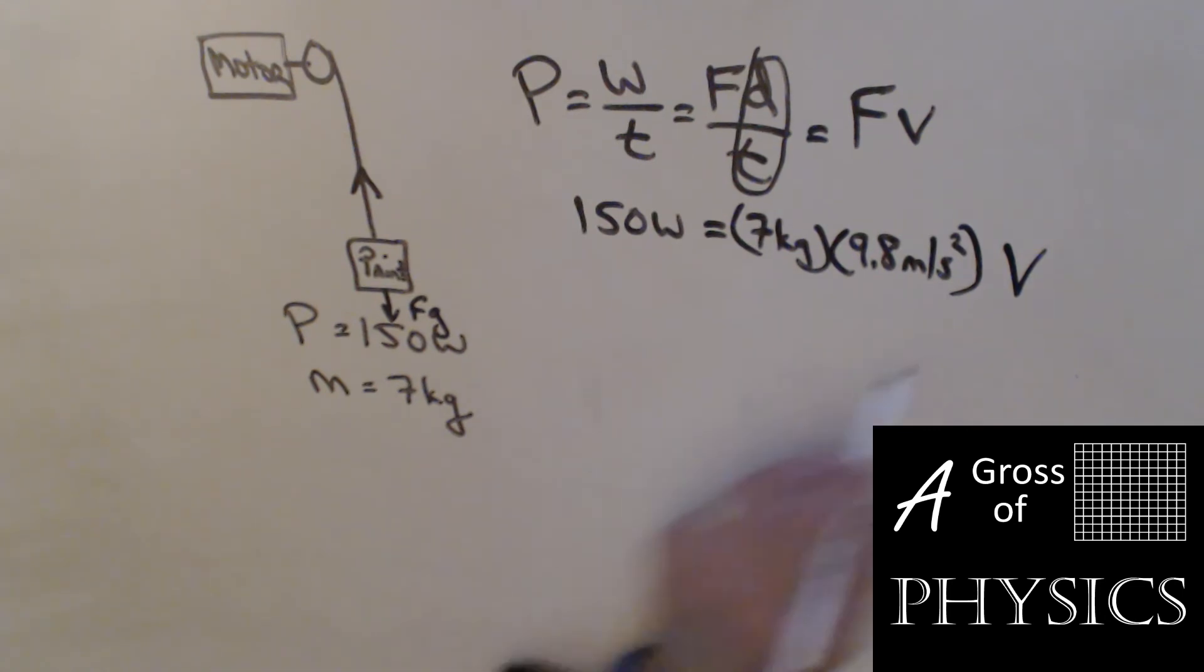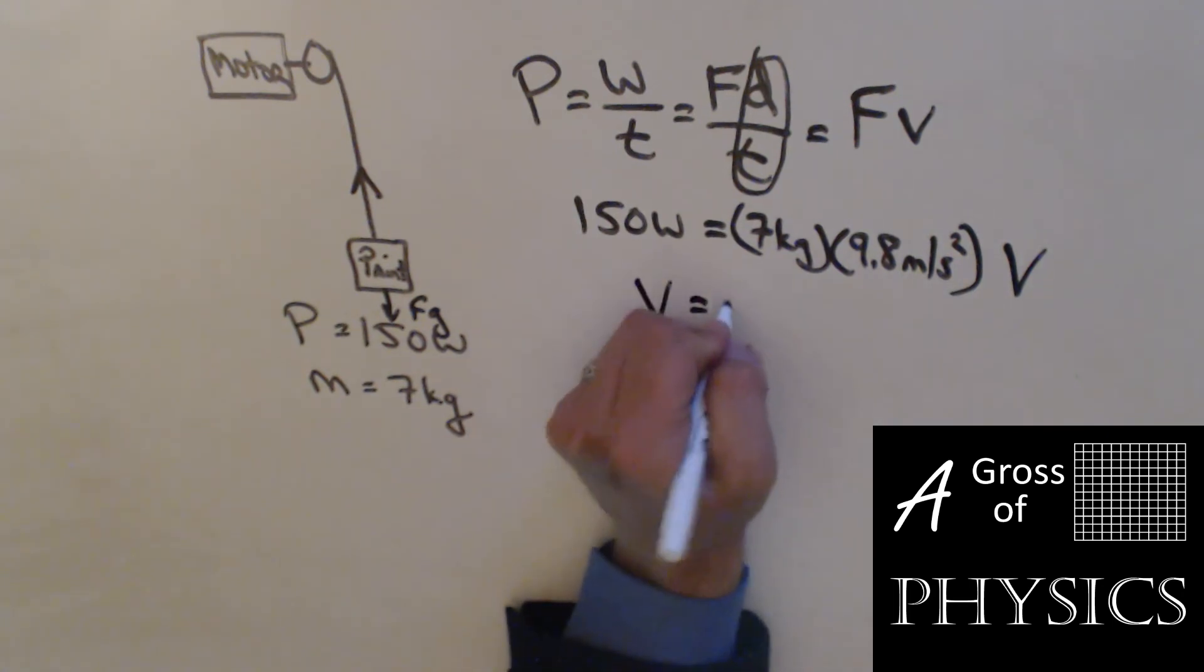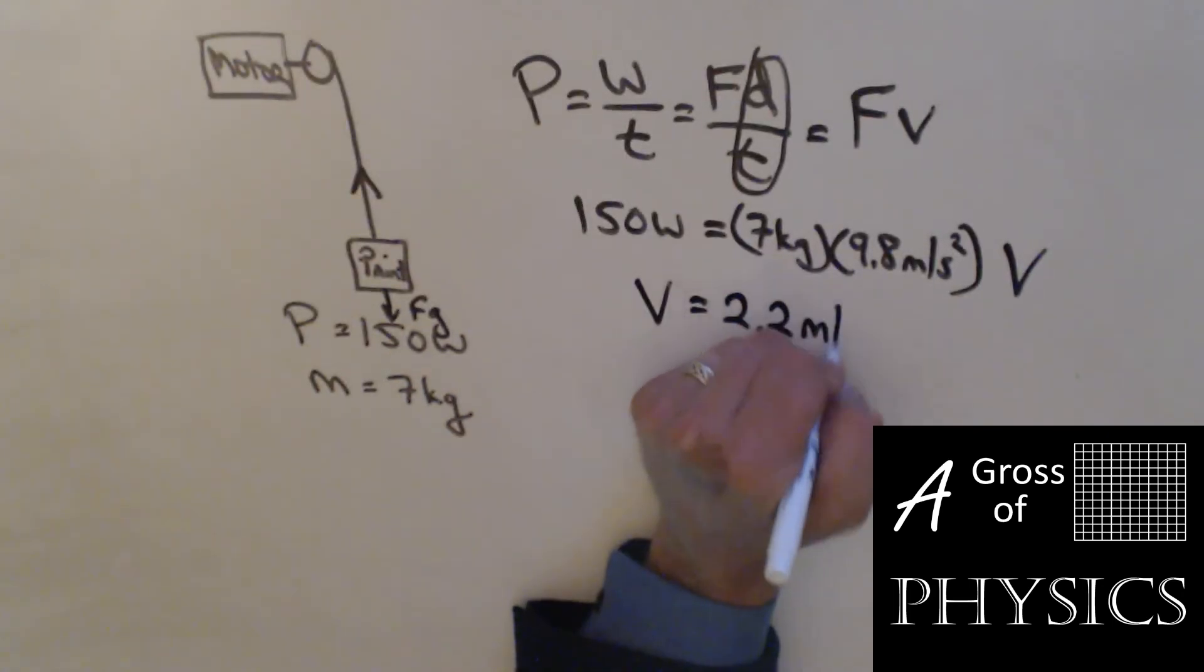This becomes a fairly simple problem. 150 divided by the speed. So this becomes a combination of 7 times 9.8, and my speed is 2.2 meters per second.